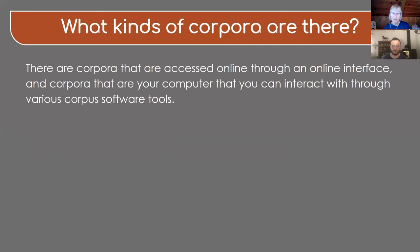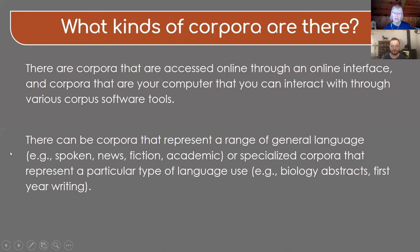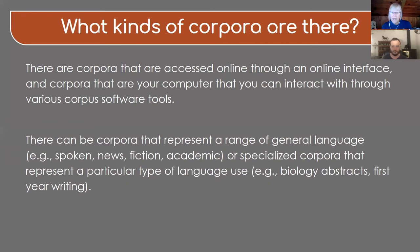So that's one way to think about kinds of corpora. Another way is to think about corpora that represent either a range of general language — so spoken language, or a corpus that has spoken, news, fiction, and academic writing or academic speaking. Or we could also look at specialized corpora that just represent a particular variety of language. So we could be as specific as saying, I just want to find out the linguistic characteristics of biology abstracts, or I want to look at first year writing.